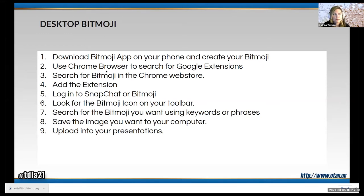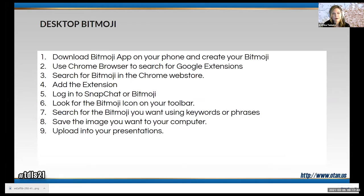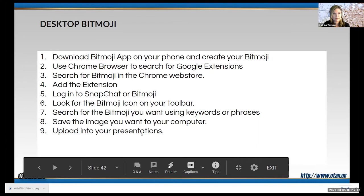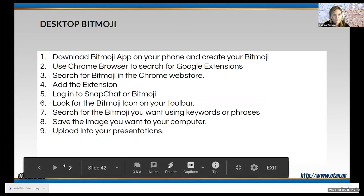Use Chrome browser and search for Bitmoji in the Chrome Web Store. Add the extension, then log in to Snapchat or Bitmoji. Look for the Bitmoji icon on your toolbar, search using keywords or phrases, save the image you want to your computer, and then upload into your presentations. You can upload these into emails, from your phone, text your Bitmoji — I use them in Google Voice, regular texting, emails, and Google Slides. Very convenient.